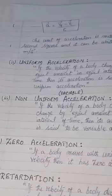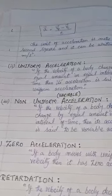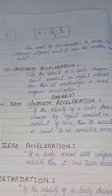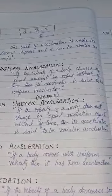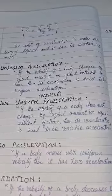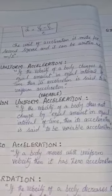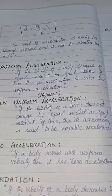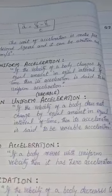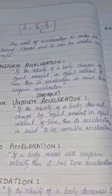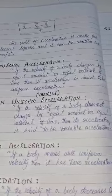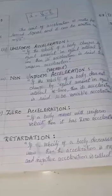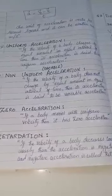Number 3: Non-uniform (variable) acceleration. If the velocity of a body does not change by equal amounts in equal intervals of time, then its acceleration is said to be variable acceleration.